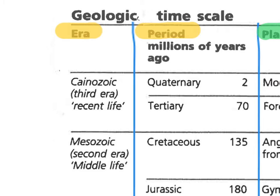I want to zoom in now on the period column. You'll see there are various numbers here — for example, there's two, meaning two million years ago, seventy million years ago, and so on. I'd like you to bracket 'millions of years' so you know those are the units. What I want to add is that what the number is really saying is that that is when the period begins — so add 'begins at' to the top of that heading.